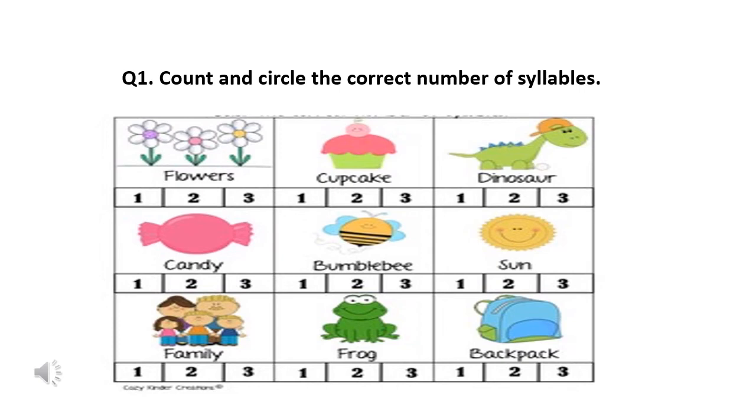Family. How many syllables? Family. One, two, or three. Frog. Frog. How many syllables? One, one syllable, two, or three syllables.